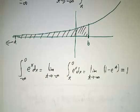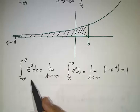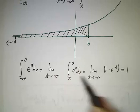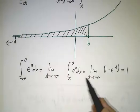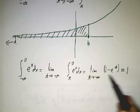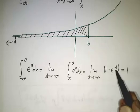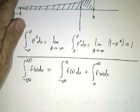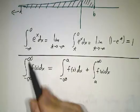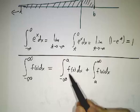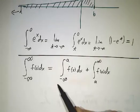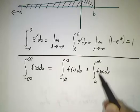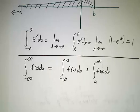For example, the integral from minus infinity to 0 of e to the x dx is computed as the integral from t to 0 of e to the x dx, which is e to the x evaluated at 0 and t. This gives 1 minus e to the t, and as t goes to minus infinity, e to the t goes to 0, so the answer is 1. Finally, if you have an integral from minus infinity to infinity, you must split it into two separate integrals — one with a limit as t goes to minus infinity, and another as t goes to plus infinity. Do not do them together.